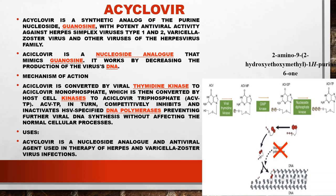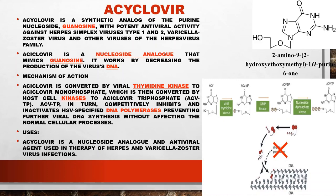The next very important antiviral drug is acyclovir. Looking at its structure, acyclovir is a synthetic analog of the purine nucleoside — as we saw in classification, purine and pyrimidine analogs. Acyclovir is a purine analog with important antiviral activity against herpes simplex virus. It is an anti-herpes drug.